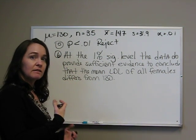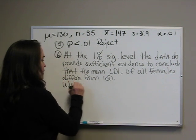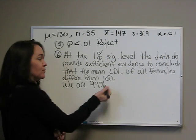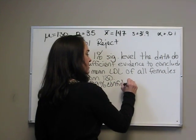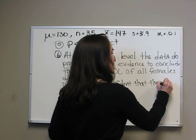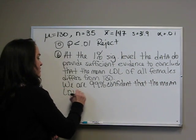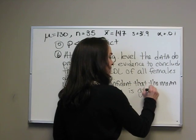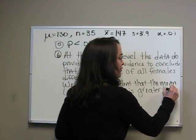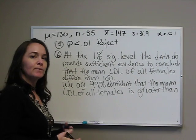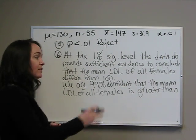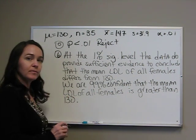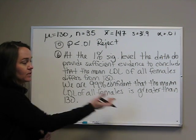The second sentence says if it's less than or greater than. We are 99%, remember those have to equal 100%, confident that the mean LDL of all females is, and in this case it's greater than. If we look at our t-value, step 3, remember it was 3.14. If it's positive, it's greater than. 3 is much larger than the average, 130. So here's our first sentence. It's different. Second sentence is greater than.